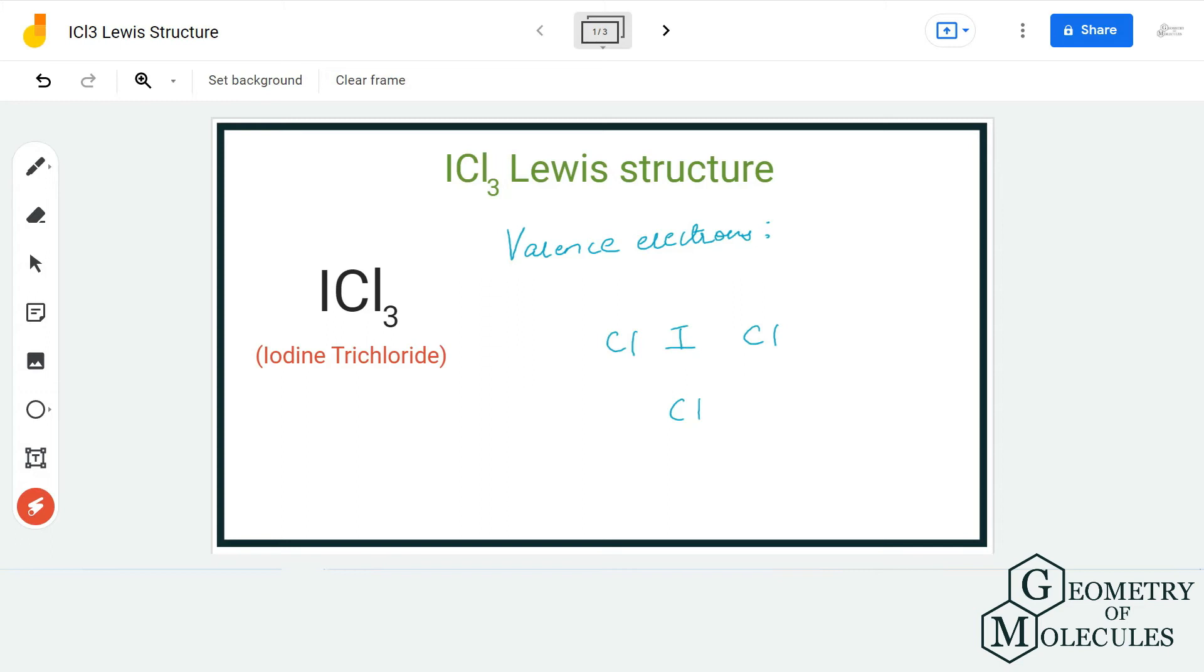Hi guys, welcome back to our channel. In today's video, we are going to help you determine the Lewis structure for the ICl3 molecule—the chemical formula for iodine trichloride. To find out its Lewis structure, we will first look at the total number of valence electrons.